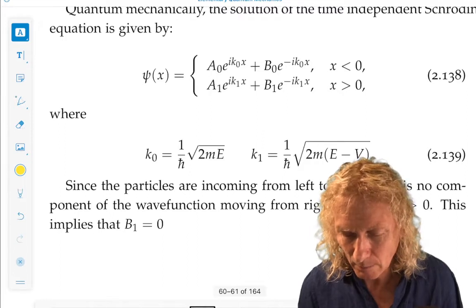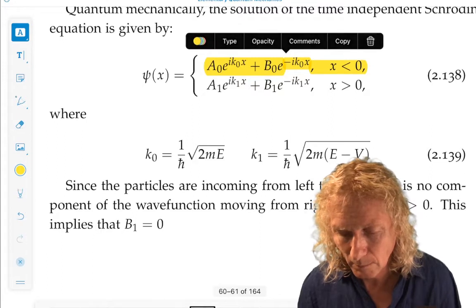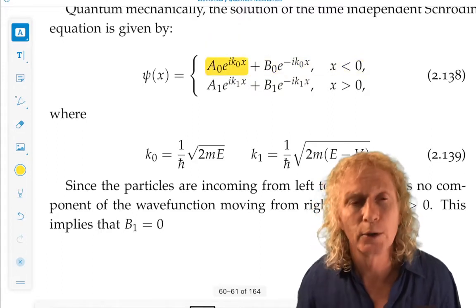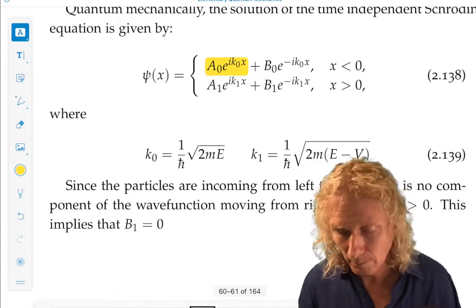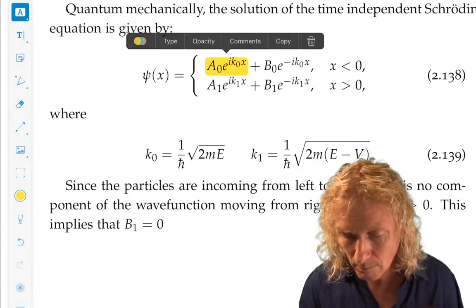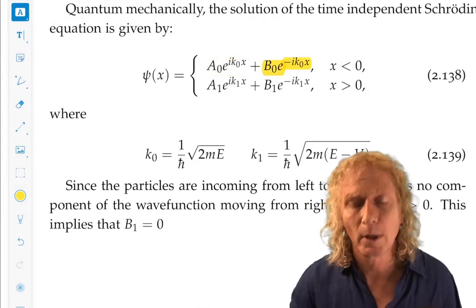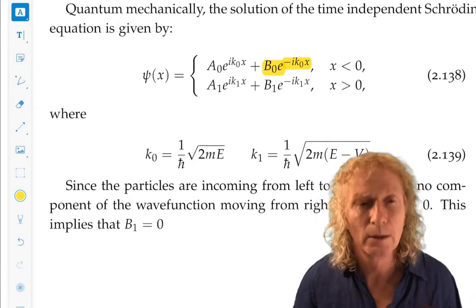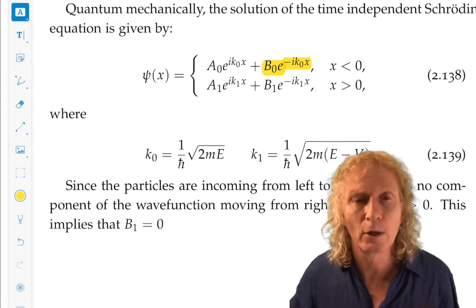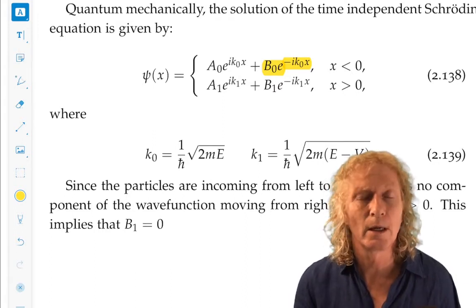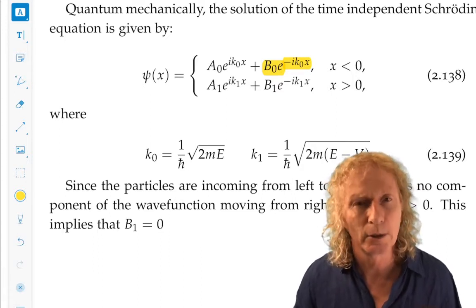By that I mean for x less than zero, we have a term corresponding to a particle moving from left to right and a term corresponding to a particle moving from right to left. And that would take into account, we don't know what a-naught and b-naught are, they're general constants right now, complex constants, and we need to determine them in terms of the matching conditions.